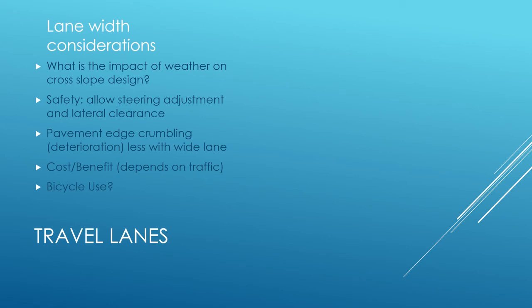For lane widths, a lot has to be considered — it really depends on traffic volume and weather. You also have to account for allowance for steering adjustment and lateral clearance. You want to stop pavement edge crumbling, so even though a car might only be eight and a half feet wide, you want an 11 or 12-foot-wide lane so cars aren't always driving on the edge.